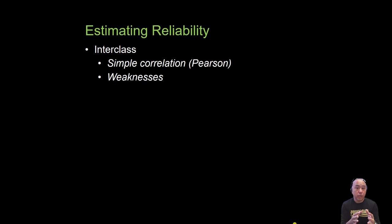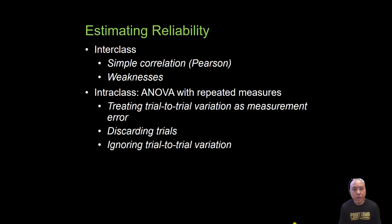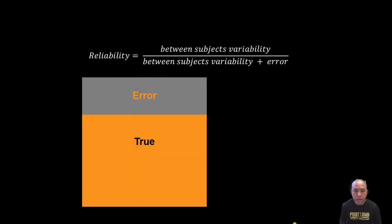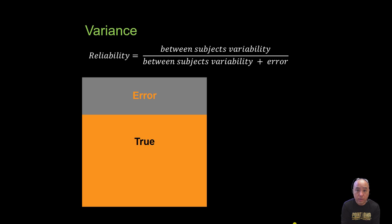The inter-class correlation is typically measured with the Pearson simple correlation, but its weakness is that it's limited to only two sets of data — for example, test-retest using two trials. More often, we're interested in the reliability of three or more trials, so we use the intra-class correlation instead. The intra-class correlation is based on a repeated measures analysis of variance (ANOVA). In fact, the variance components of an ANOVA make up the components of the intra-class correlation coefficient. Before we perform an ICC, let's back up to the theoretical definition of reliability.